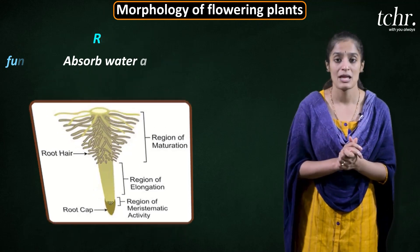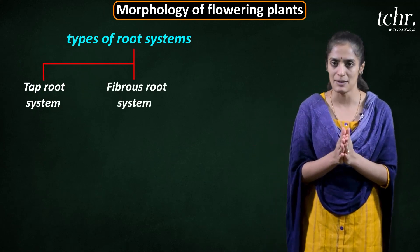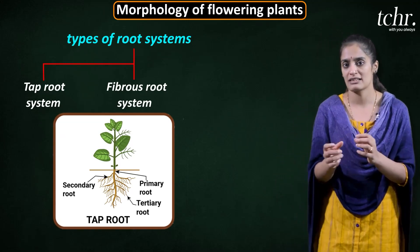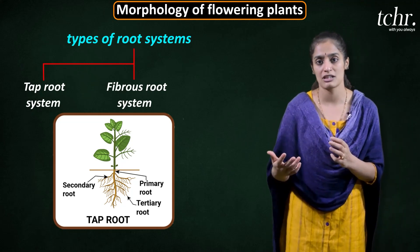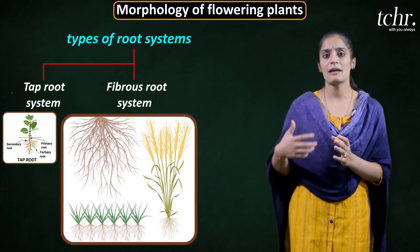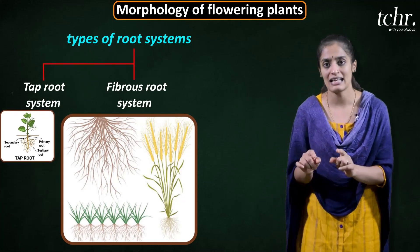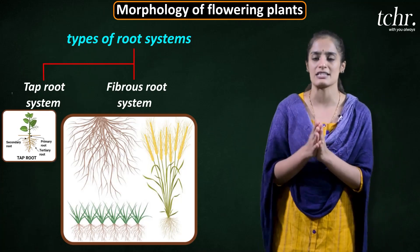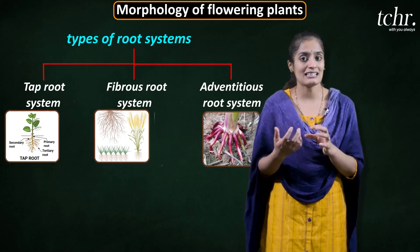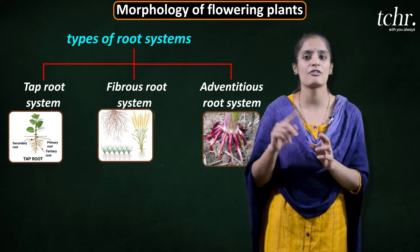In the root, there are two different types. One is the tap root system and the other is the fibrous root system. The tap root system is derived from the radical in the growth of the root. The last type is the adventitious root.